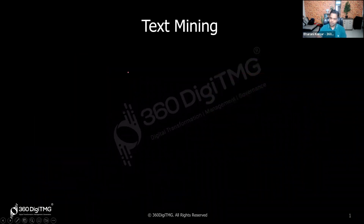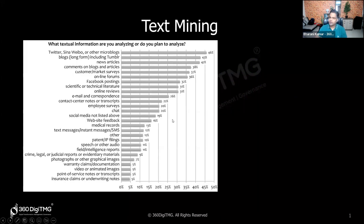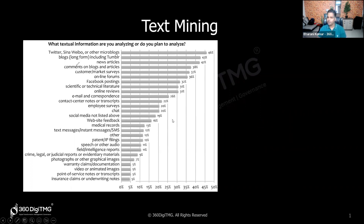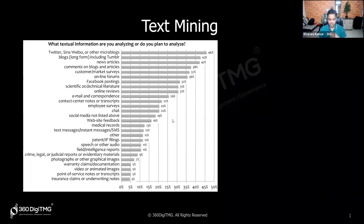Now, why do people need textual data, and what are the various sources? You have social media: Facebook comments, Twitter tweets, Sina Weibo (a Chinese Twitter equivalent), microblogging platforms like Tumblr, news articles, comments on blogs, and product reviews on e-commerce portals like Amazon where you leave feedback.